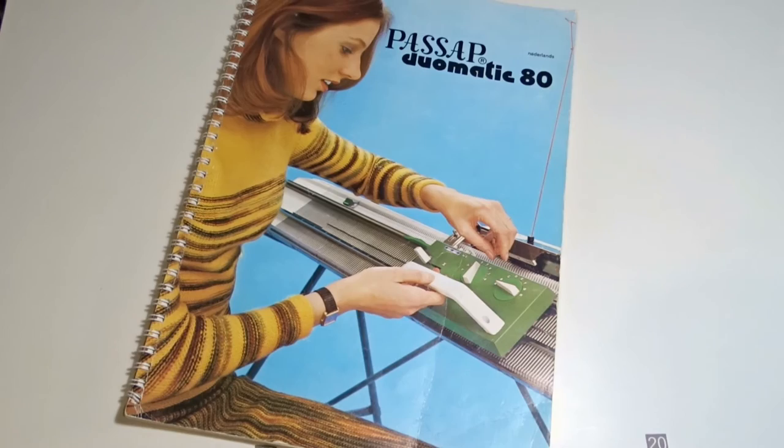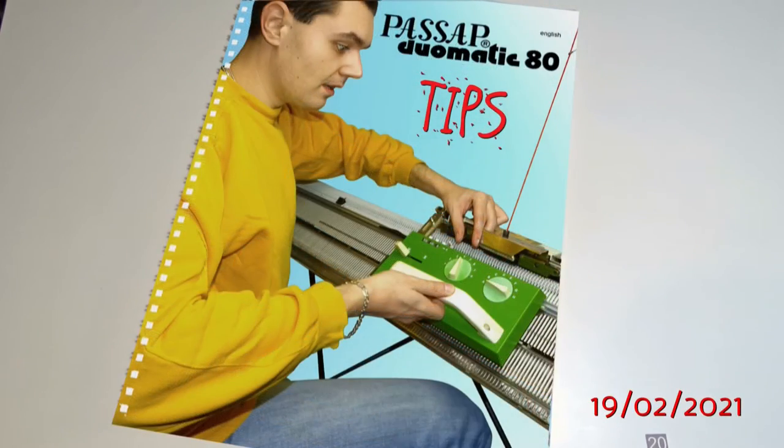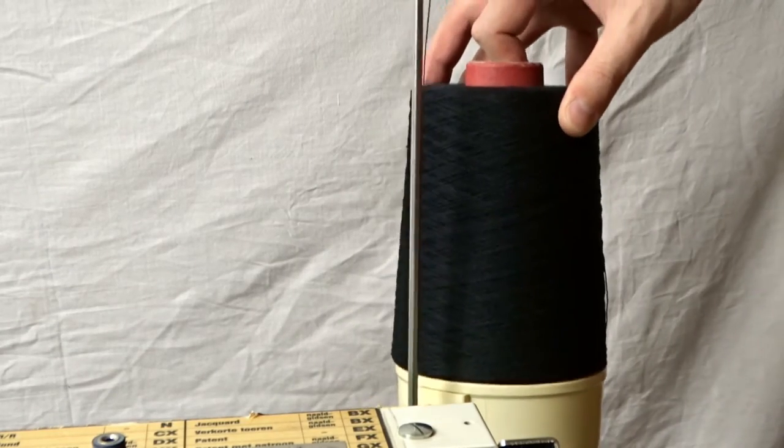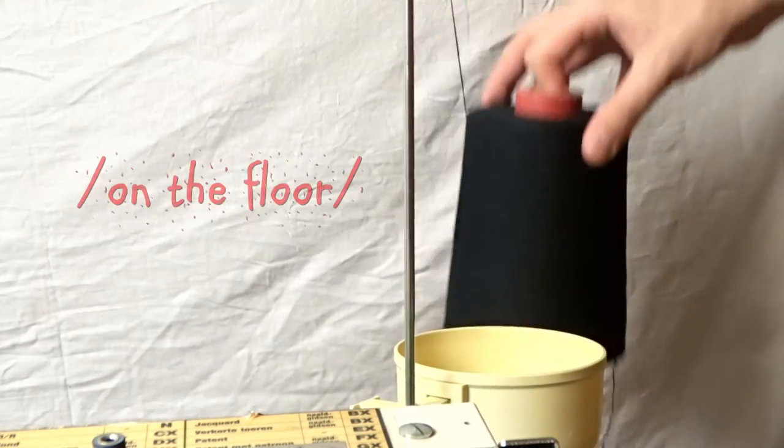And now, I will share a few tips with you. If you are using a very big bobbin of yarn and you can't place it into the plastic cup, you can place it behind the machine.